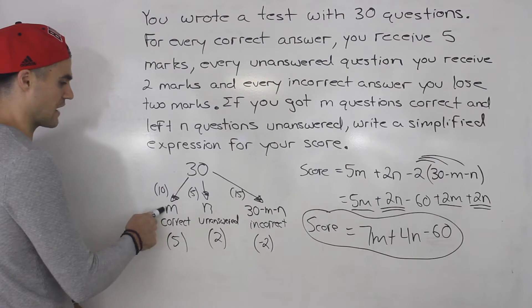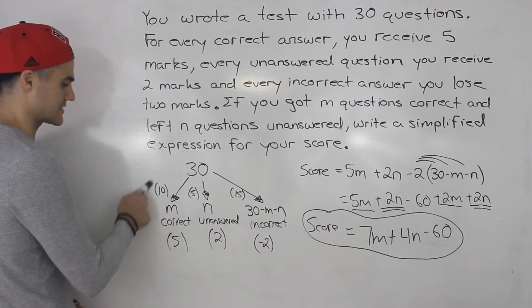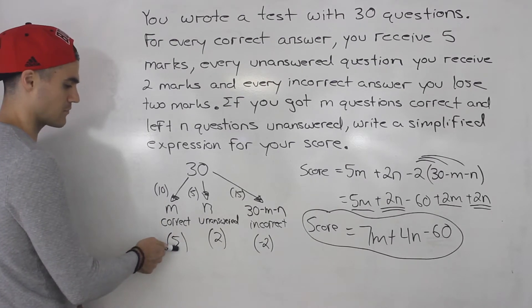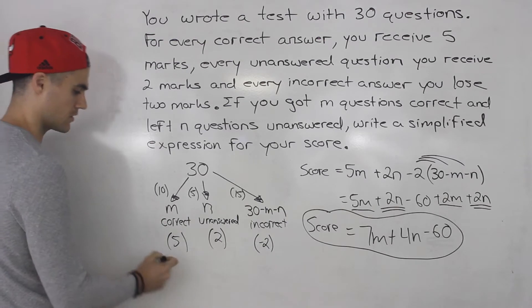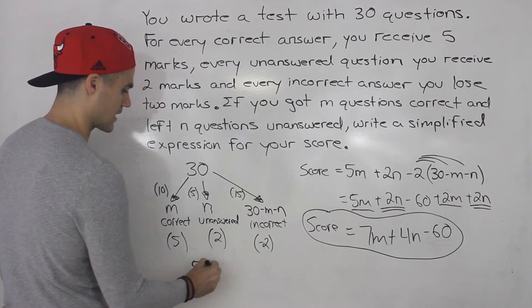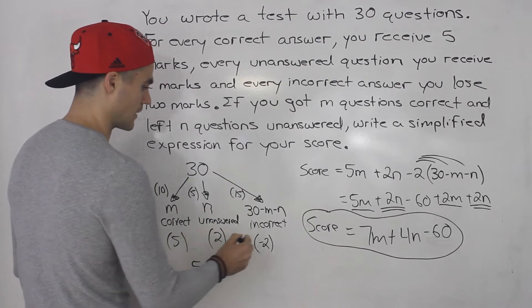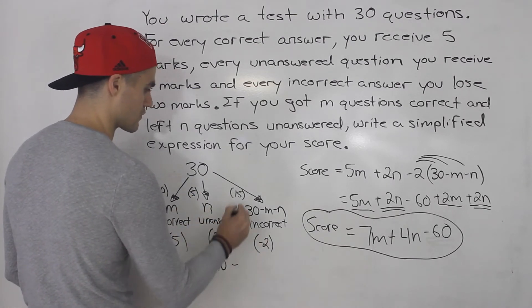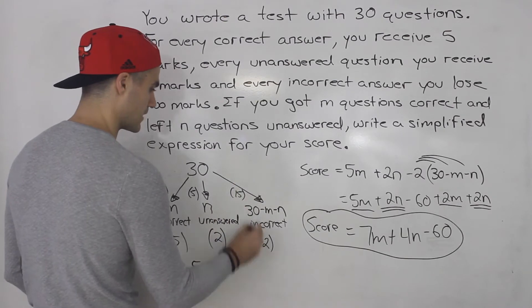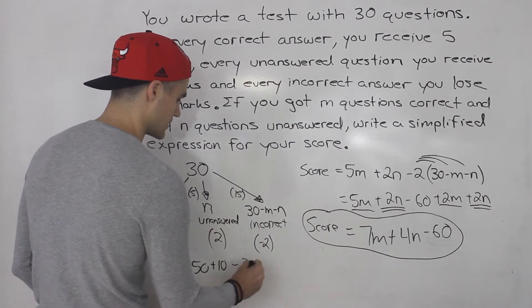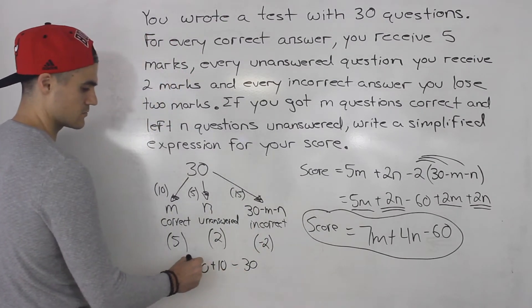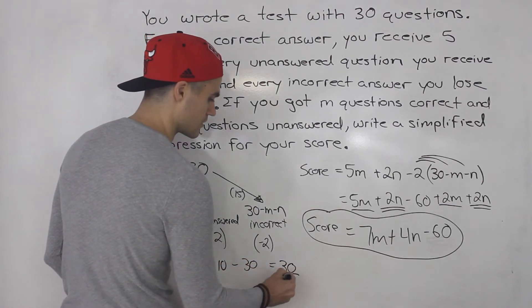So if we got 10 correct then we're getting 5 marks each for them. So that would be 50 marks. And then here we're getting 10 marks. 2 marks times 5 unanswered. Then we're losing 2 marks here for the remaining 15. So minus 2 times 15 gives us minus 30. So this would be 60 minus 30 which would give us 30.